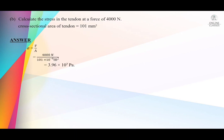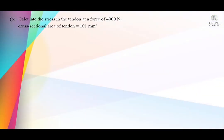Next, calculate the stress in the tendon at a force of 4000 Newton, with cross-sectional area given. Stress equals force over cross-sectional area. The cross-sectional area is 101 mm², which must be converted to m²: 1 mm = 10⁻³ m, so 1 mm² = 10⁻⁶ m². Therefore: 4000 ÷ (101 × 10⁻⁶) gives 3.96 × 10⁷ Pascal or Newton per meter squared.